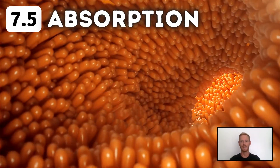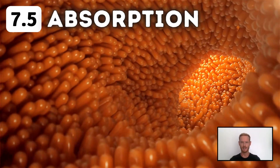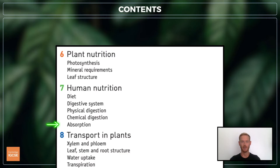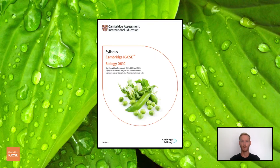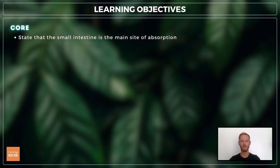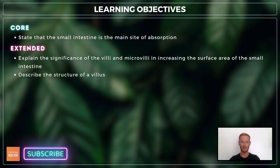Hello and welcome to another complete Cambridge IGCSE biology lesson, where you'll learn absolutely everything you need to know on topic 7.5, absorption. We'll be following the Cambridge syllabus exactly and cover everything you need to know for your final exam. For topic 7.5, you need to state that the small intestine is the main site of absorption, and for extended, explain the significance of villi and microvilli.